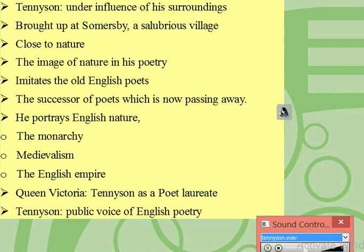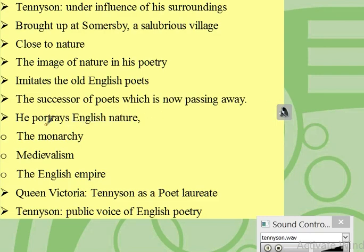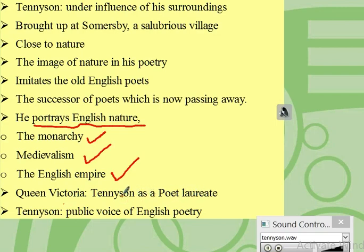Many critics believe that he had a desire to imitate the old English poets and they consider Tennyson as the successor to the great generation of poets which was then passing away. By and large, in his domestic poetry Tennyson portrays English nature and landscape, the monarchy, medievalism, and the English Empire in the 19th century. In the 19th century, Queen Victoria entitled him as Poet Laureate, so Alfred Lord Tennyson became the public voice of English poetry and he remained popular for many years.